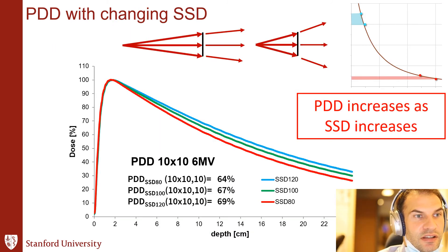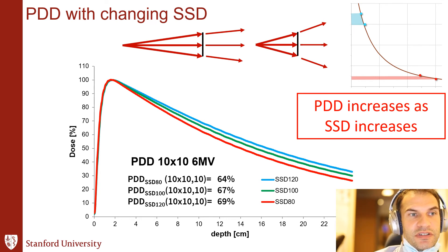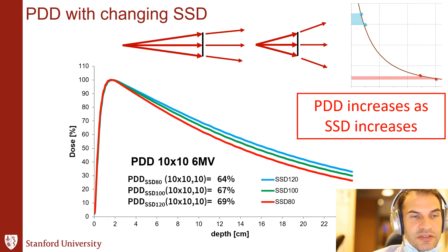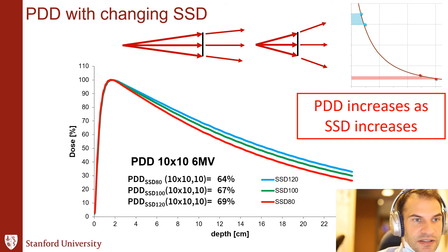PDD also changes with SSD. When you move your patient further from the radiation source, the percent depth dose changes. It's because you're changing the inverse square law — as you move further away, over the same depth range, there's a smaller change in total inverse square as a function of distance from source to point of interest. Essentially, the slope of the PDD gets more shallow as you increase SSD, so the PDD at any given depth increases as you increase the SSD.